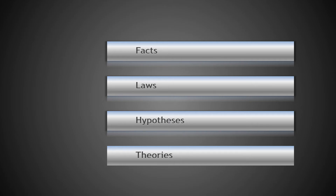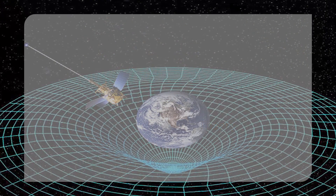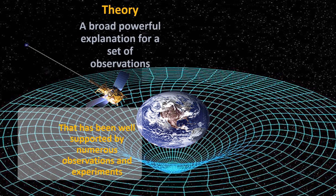The last one: theories. Here's Inigo Montoya from The Princess Bride — one of my favorite movies — who kept saying, 'You keep using that word. I do not think it means what you think it means.' And that goes for theory. Theory is one of the most abused words in our language, and its usage in science versus our common everyday usage is very, very different. A theory makes a broad, powerful explanation for a set of observations. Unlike in common everyday usage, scientific theories have been very well supported by many observations and many experiments. Saying 'I have a theory about why my car doesn't work' — that's not really a theory; that's an idea or a hypothesis. Scientific theories are actually well supported.